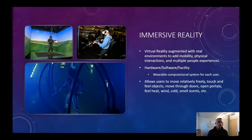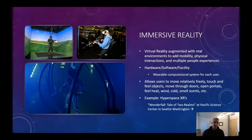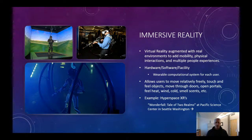In immersive reality, you can touch and feel objects, move through doors, open portals. They can add the feeling of heat, wind, cold, smells, and scents in certain areas. A good example is Hyperspace XR's Wonderfall, called A Tale of Two Realms. This is a pilot they've been running in Seattle at the Pacific Science Center. It's had a lot of fanfare and they've been testing the system with plans to go bigger — eventually targeting venues like Disneyland.